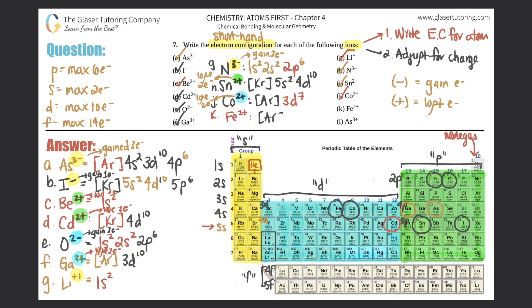K: Fe²⁺. Fe is over here; noble gas before it is argon. So Ar, then 4s2, then at 3d going all the way to iron: 1, 2, 3, 4, 5, 6 — so 3d6. Plus 2 charge means we lost 2 electrons. Between n=4 and n=3, take from n=4. The two electrons in 4s get lost — erase that. Now left with just 3d6. That's the electron configuration for Fe²⁺.